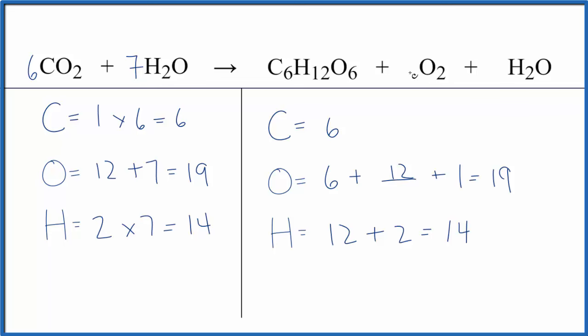Since we have oxygen by itself, we put a six here. Two times six. That gives us the 12. This equation is balanced. By putting the six here, it won't change the number of carbons or hydrogens. That's why we left that until last. So that's the balanced equation for CO2 plus H2O yields C6H12O6 plus O2 plus H2O.